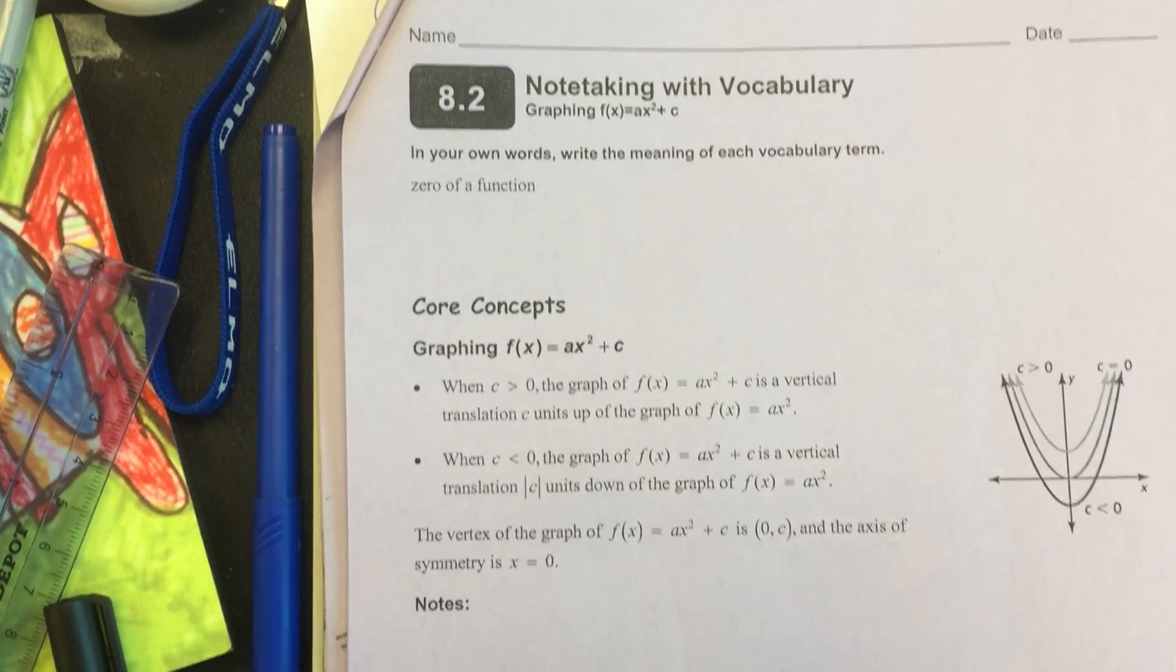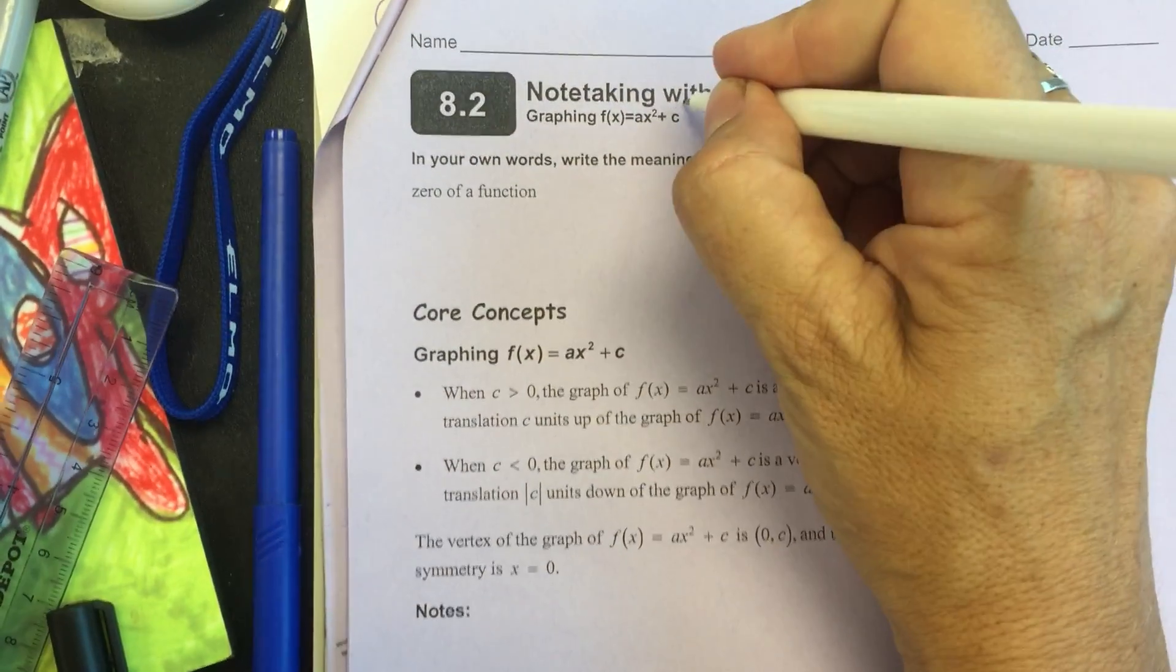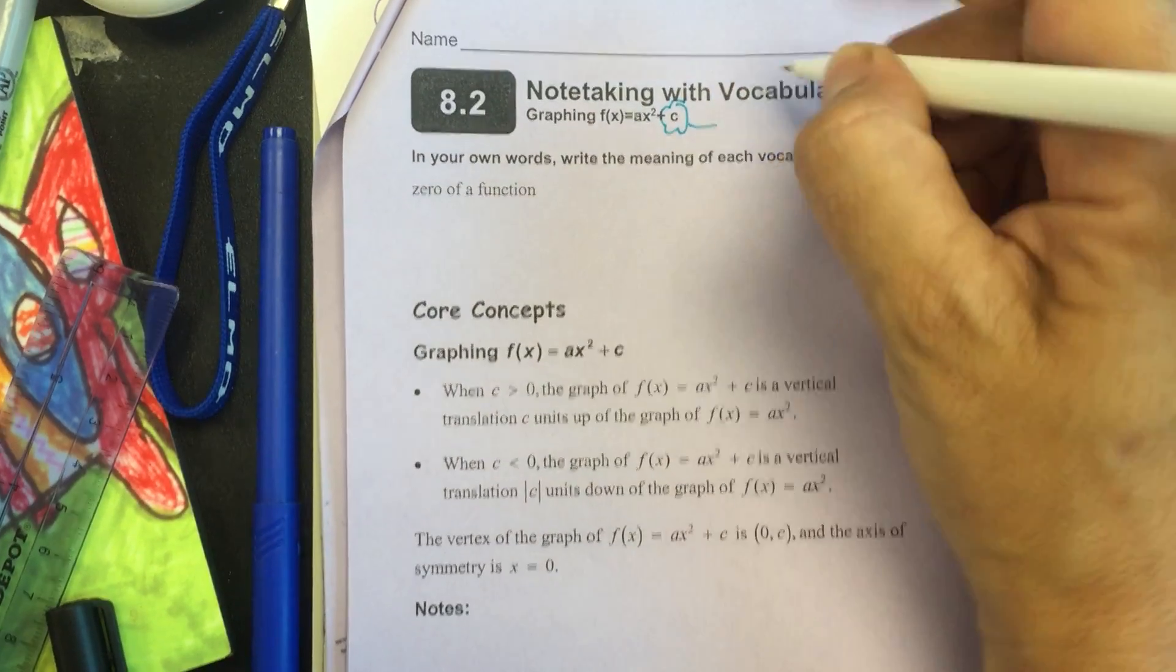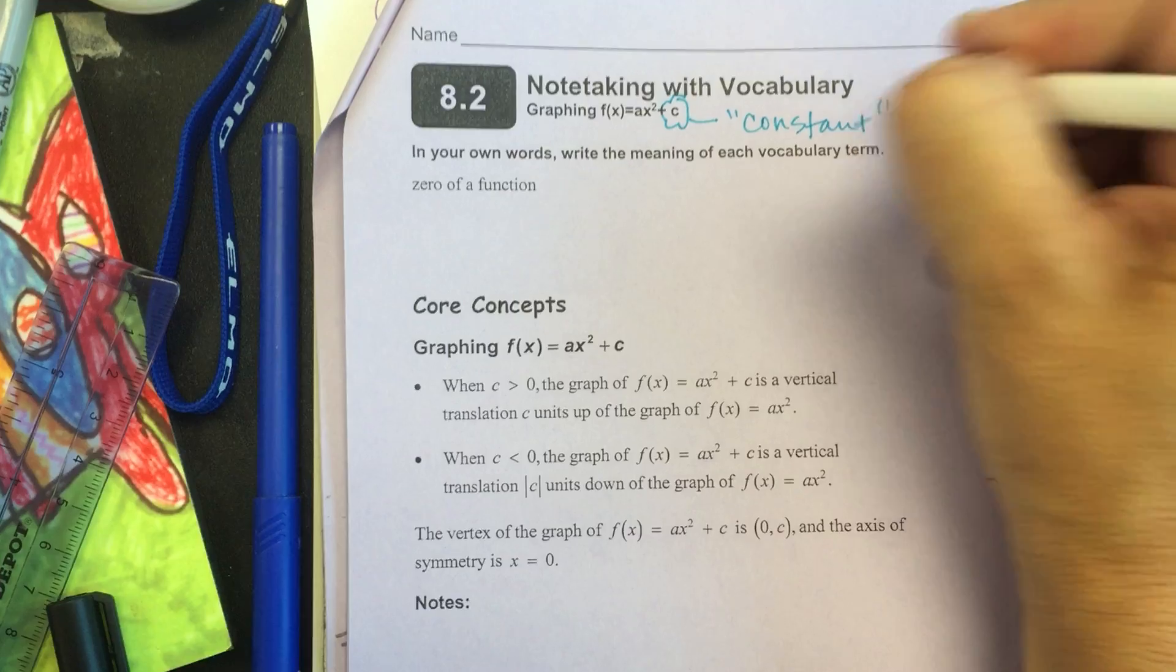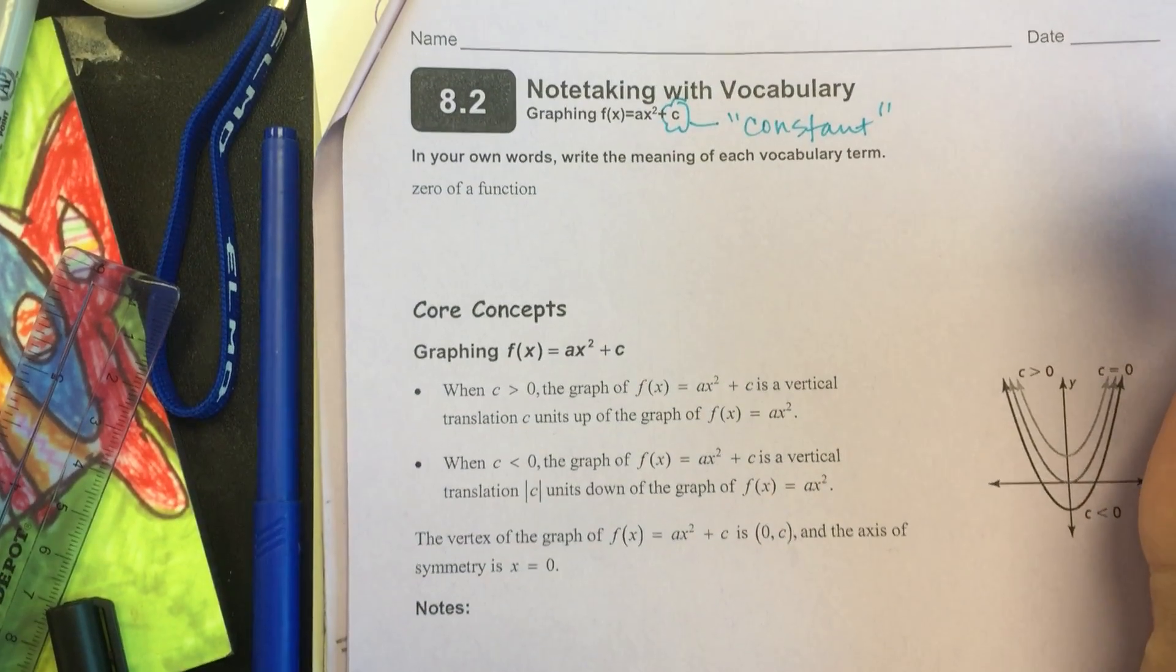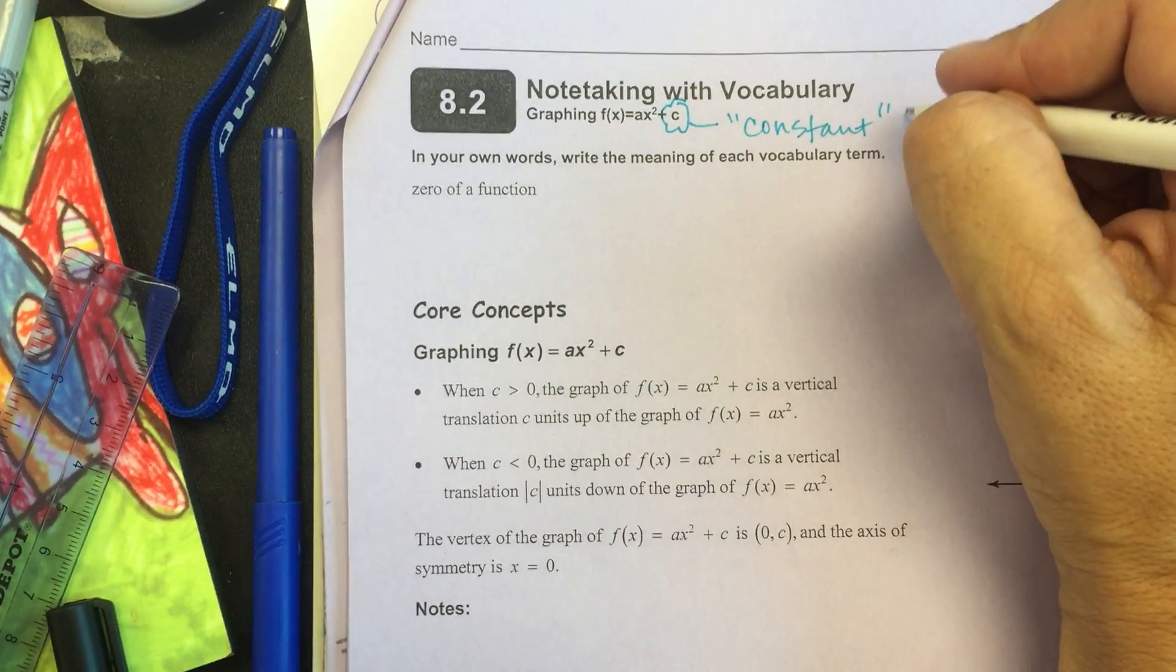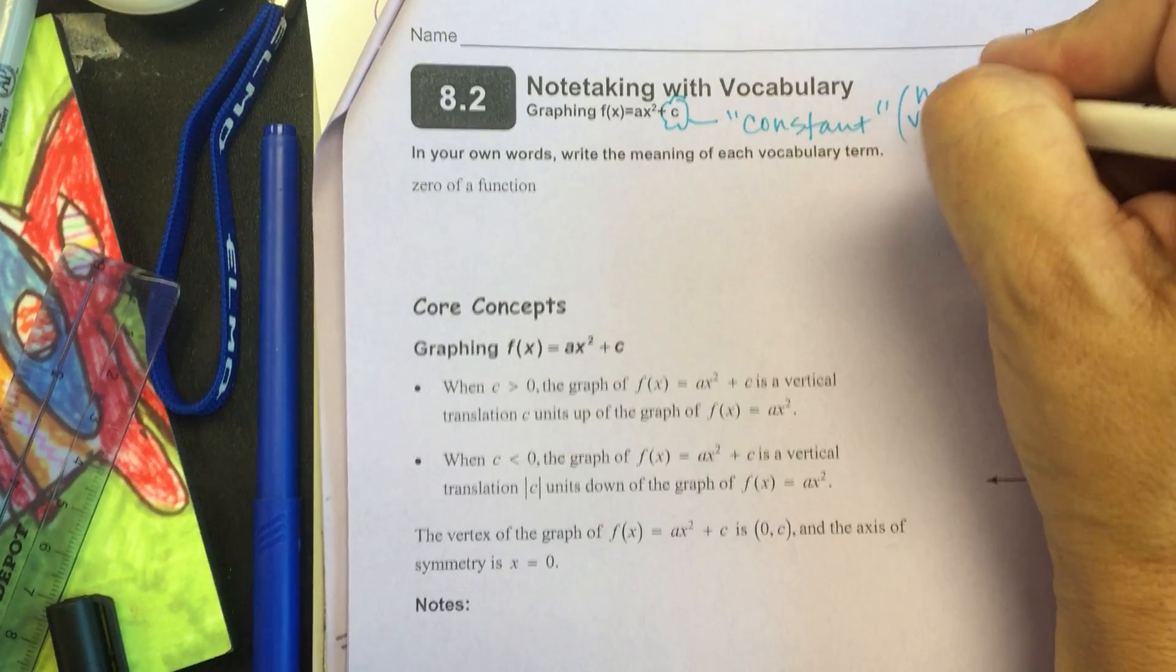Our whole 8.2 section goes and takes our parent and starts adding a constant to it. This is graphing with a constant. There's nothing stuck to it, no variable stuck to it. It's all hanging out by itself.